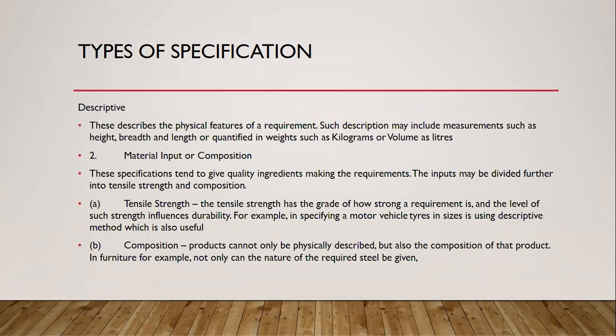We have various types of specification. The first one is descriptive specification, which normally describes the physical features or requirements needed in a particular item — the height, breadth, length, quantified weight in kilograms, or volumes. The second is material input or material specification, which gives the quantity or quality of ingredients required to make a particular item. Inputs are divided into two: tensile strength and composition. Tensile strength is about the grades of how strong a requirement is and the level of strength that influences the durability of a product.